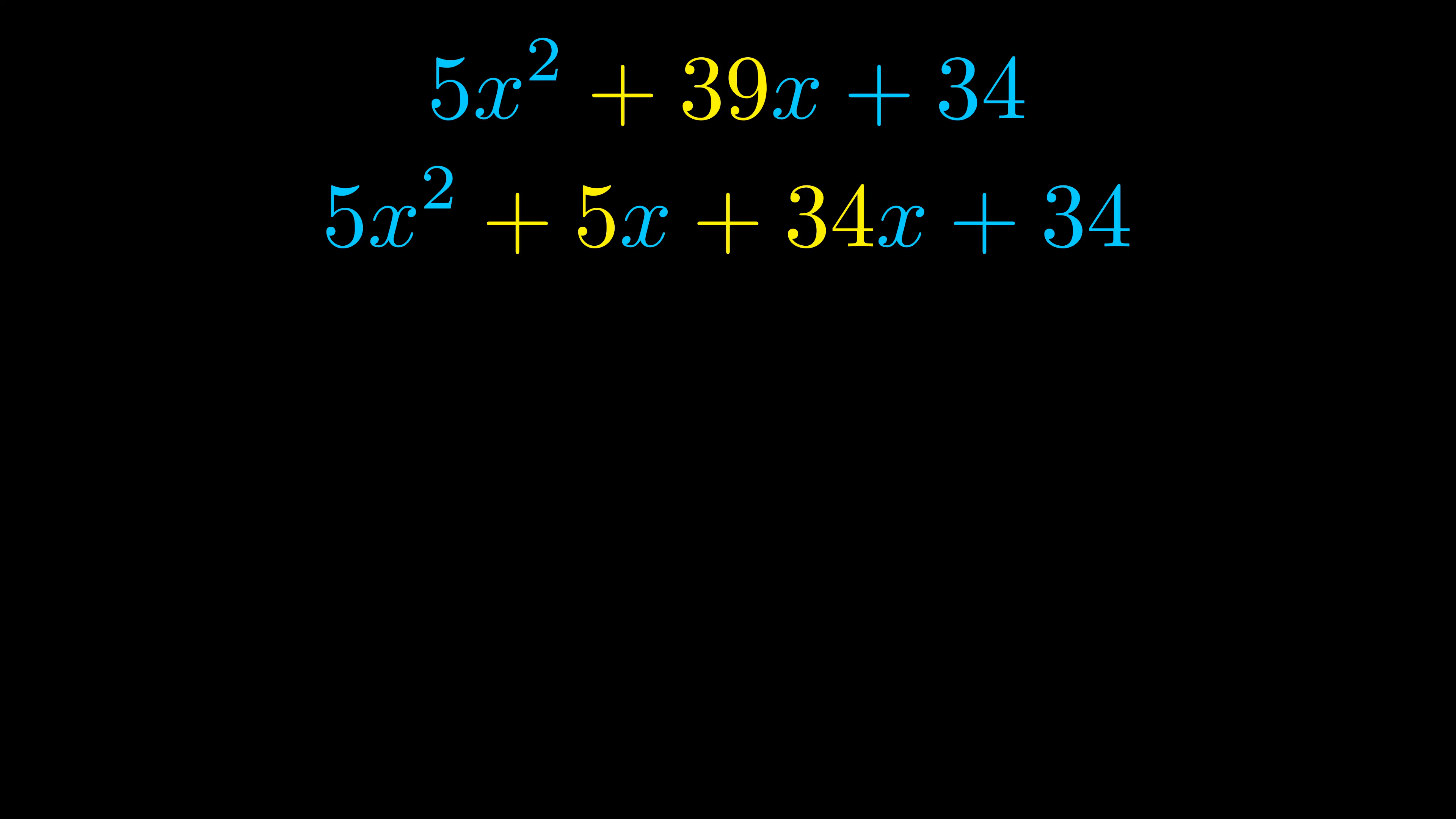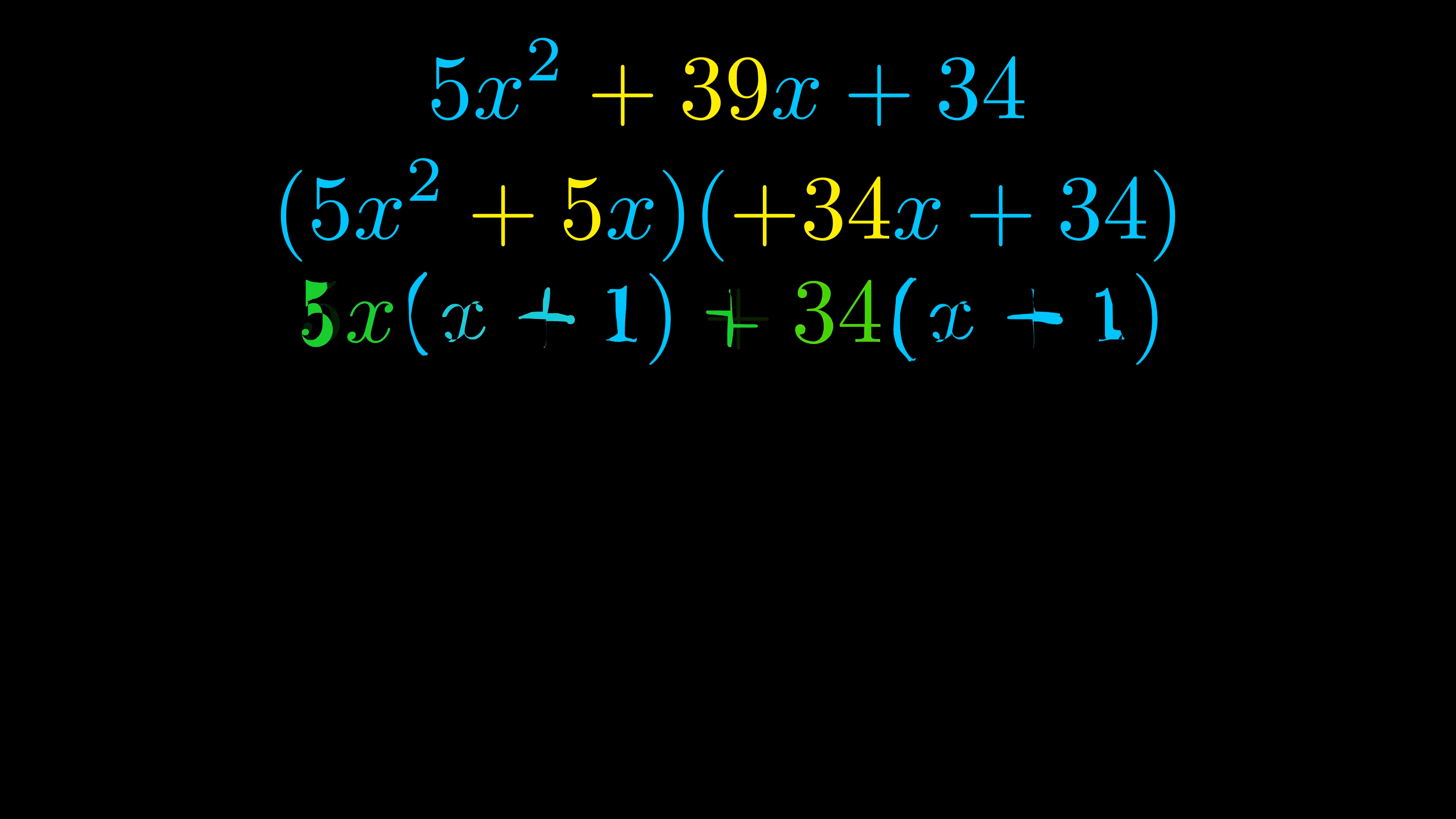Once we've done this we go ahead and put parentheses around the first term and the last term. And we do that so that we can take the greatest common factor out of both terms. We can see the greatest common factor is now outside in green.